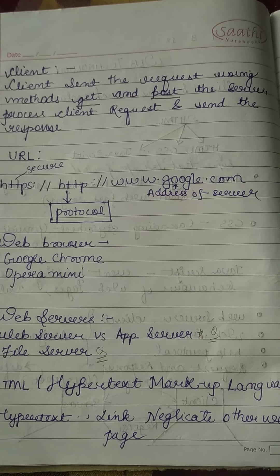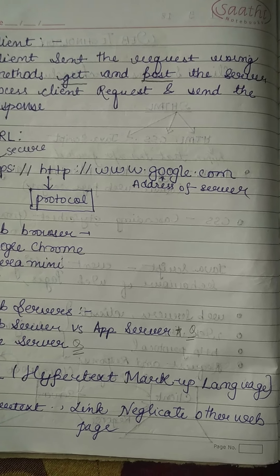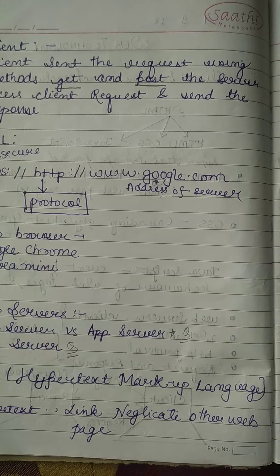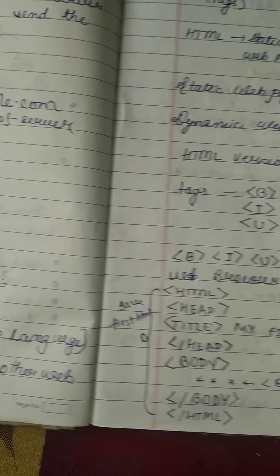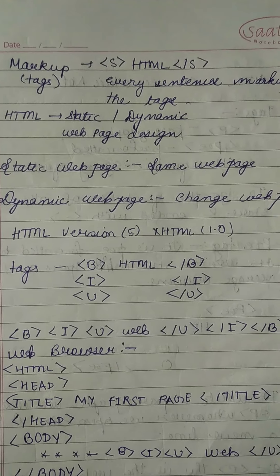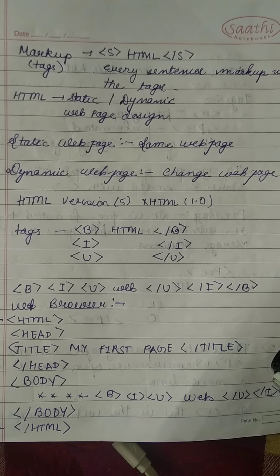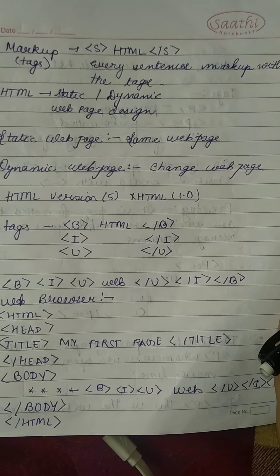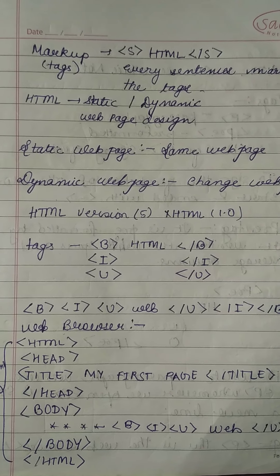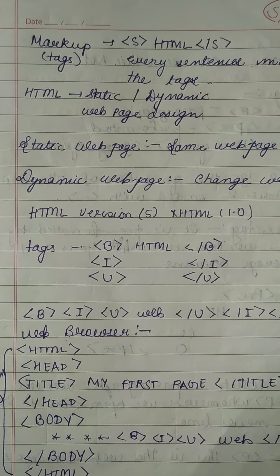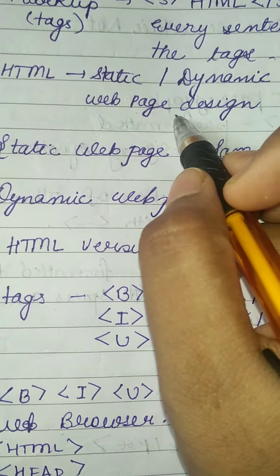We will start with HTML right now. Hypertext means it is having the link to navigate to other web pages. Markup means every sentence or element is marked up with a tag — for example, we use the S tag. HTML supports both static and dynamic types of web pages.